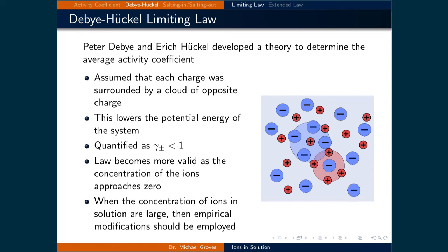We just covered that we cannot directly calculate individual ionic activity coefficients, so using them to calculate an average activity coefficient is also not a good strategy. However, Peter Debye and Enric Huckel developed a theory to determine the average activity coefficient. Central to their theory, they assumed that each charge was surrounded by a cloud of opposite charge, which lowers the potential energy of the system. This results in the average activity coefficient being less than 1.